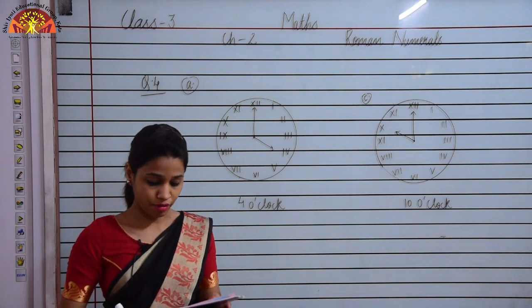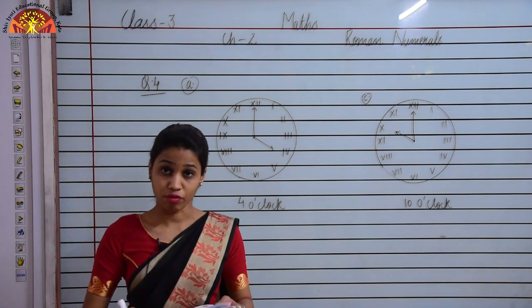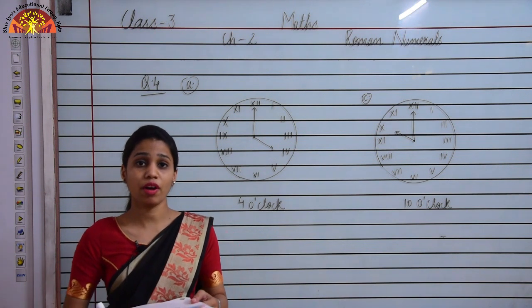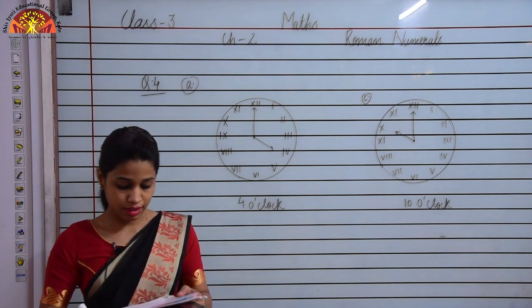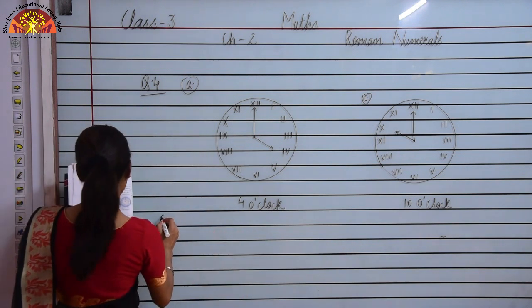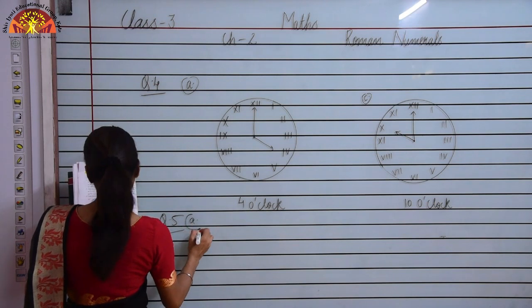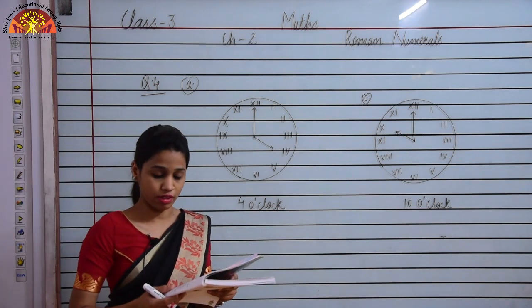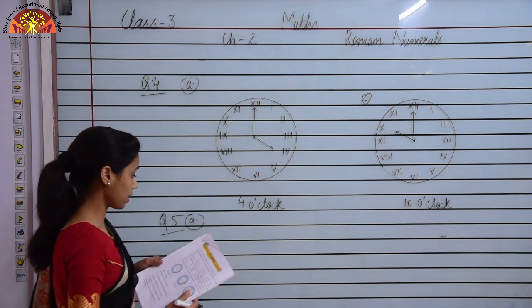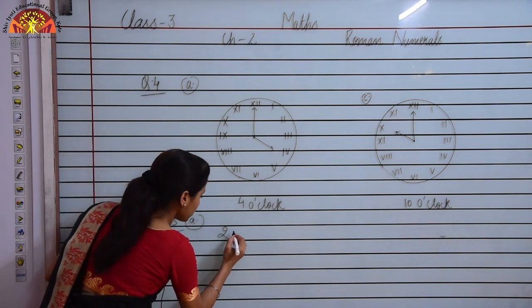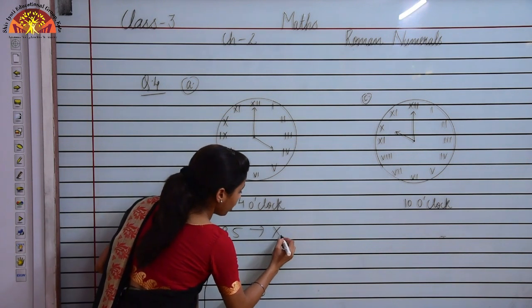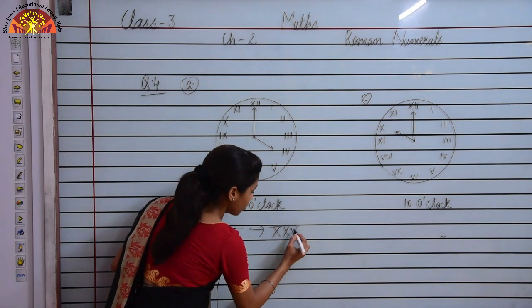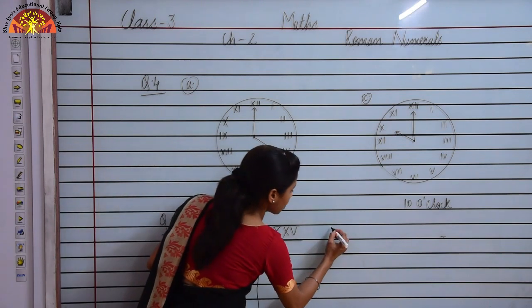Now let us see question number 5 given on page 24. Question number 5 is: write true or false. Part A is: the Roman numeral for 25 is XXV. Now how will we represent 25? We will write XX, that is 20, and the symbol of 5 is V. So 25 is XXV — therefore the answer is true.